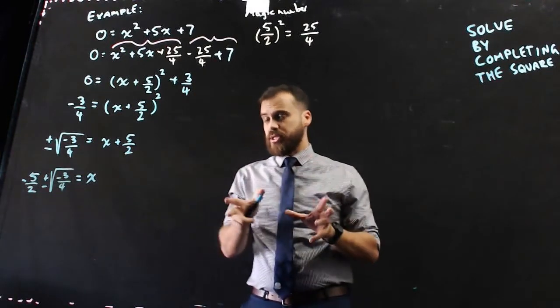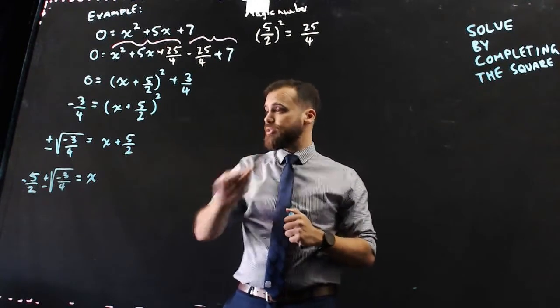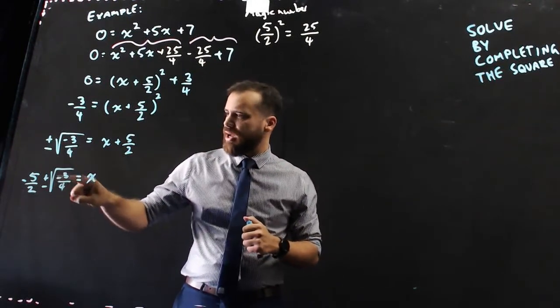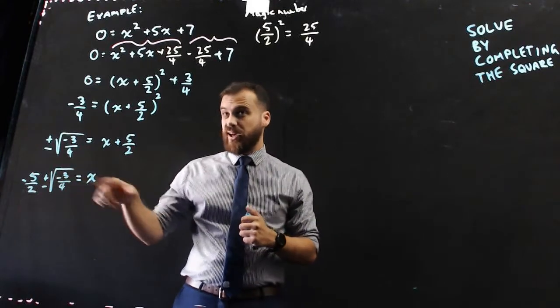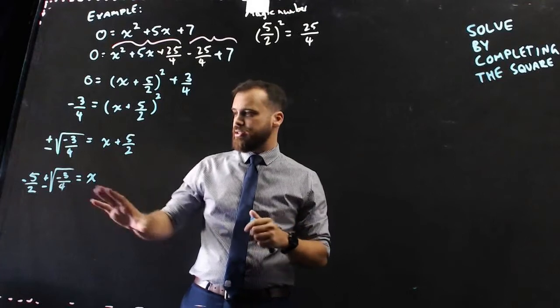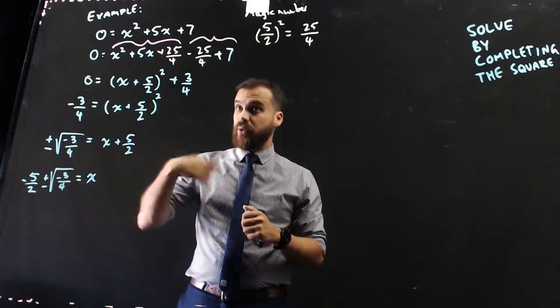Alright, now I said I caused myself a bit of an issue. When I wrote this question, I didn't realize the answer is going to have a negative under the square root sign. Now, if I type this into my calculator, it's going to say error. So, I can just stop here, but if that was positive, I would go one more step.